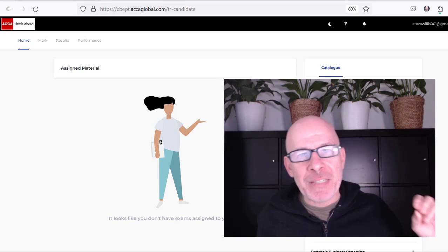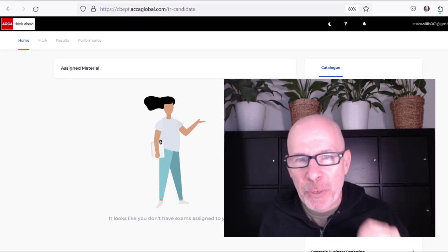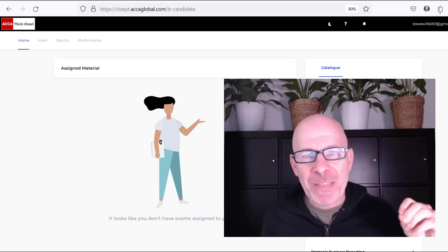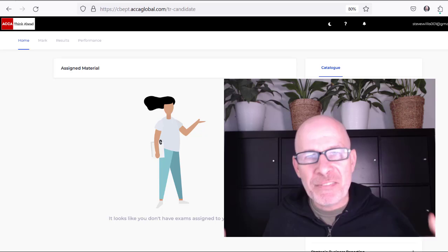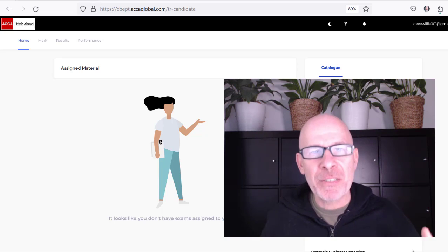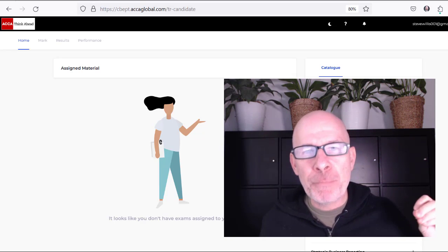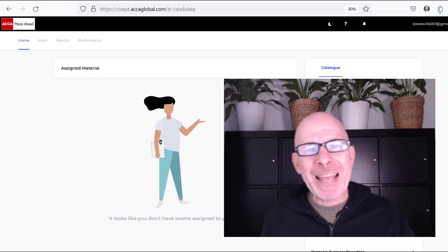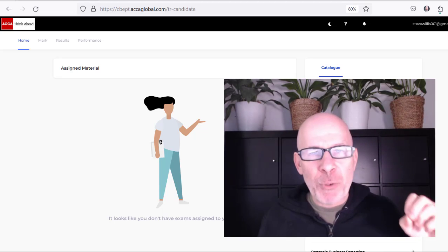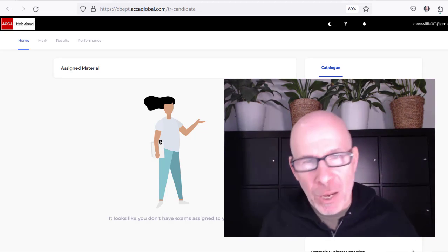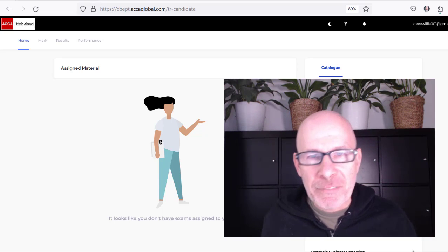What's up, ACCA students? In this video, I'm going to share with you a superpower that will help you get a pass on any of the Applied Skills exams. Those are the exams with multiple choice, fill-in-the-blank, objective test questions. In this video, I'll show you examples from the Performance Management exam, but you could apply these tips to any of the Applied Skills exams. If you have any questions, drop them in the comments below, and please give this video a like if you find it helpful. All right, let's jump in.